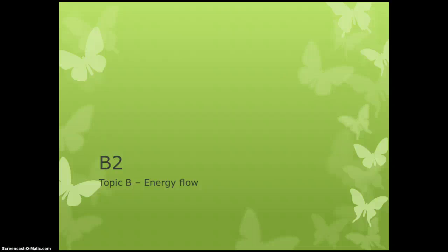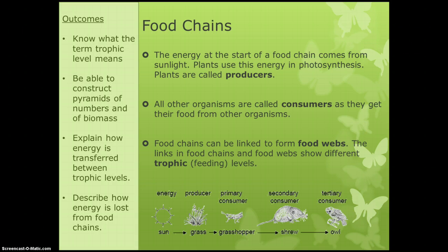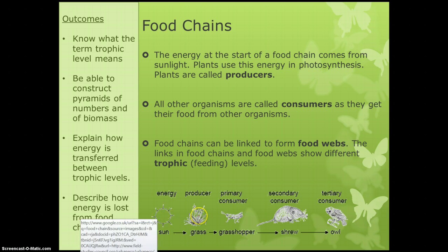Our next biology topic is entitled energy flow, and this is just about how energy travels from the sun and pretty much down food chains. To make sure we're all clear on what we mean by a food chain: food chains are just telling us what eats what. And they all start with the sun, so if we just start with the sun here — this is my food chain at the bottom and this is the sun where it all starts from.